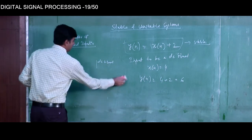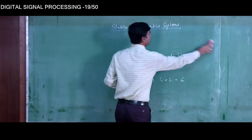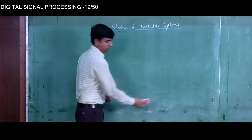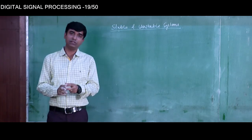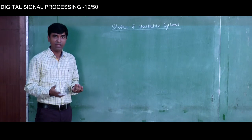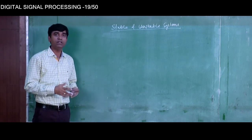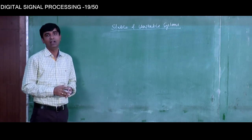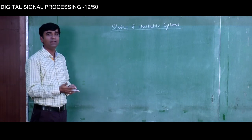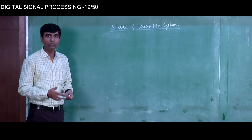I hope the understanding of stable and unstable systems is now clear. With this, we are done with the types of systems. In the next lecture, we will discuss how to represent a signal by unit impulses and what convolution and convolution sum are.